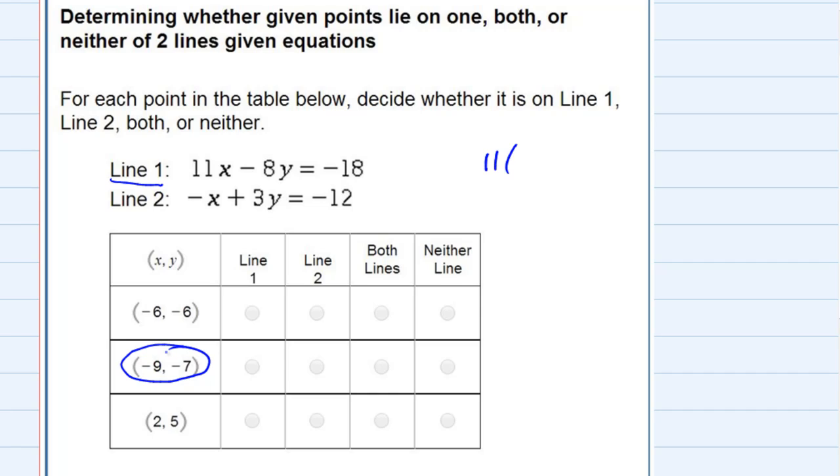So replacing the x, I would have 11 times negative 9, and replacing the y with negative 7, that would be minus 8 times negative 7, and the question is, is that going to give me negative 18? That's replacing the x and y with our two numbers.